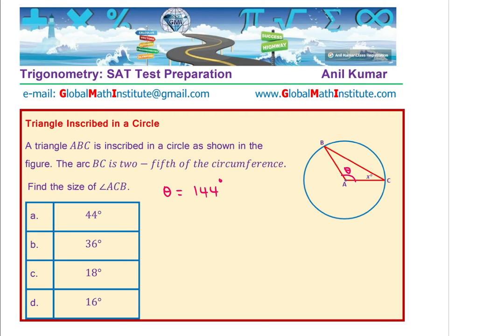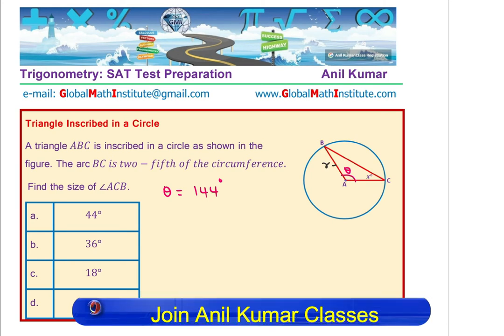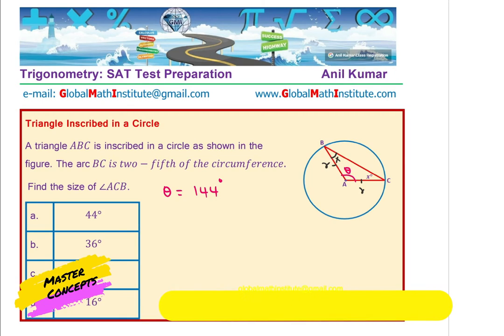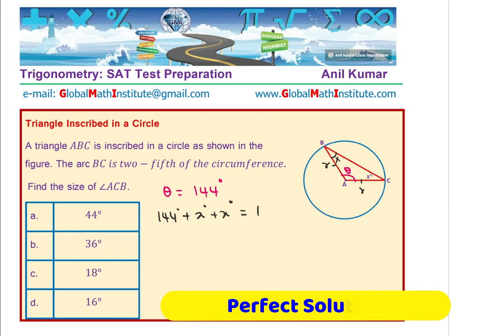Since it is a triangle within a circle, the two sides are radii and therefore it is an isosceles triangle giving the other angle as x. Sum of the three angles should be 180 degrees. So we know this 144 plus x degrees plus x degrees should give you 180, and that means that 144 plus 2x is 180 degrees.